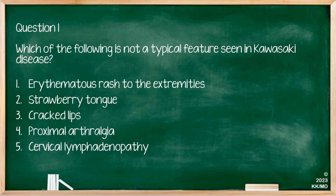Which of the following is not a typical feature seen in Kawasaki disease? Options are erythematous rash to the extremities, strawberry tongue, cracked lips, proximal arthralgia, and cervical lymphadenopathy. Options one, two, three, and five are classic features of Kawasaki disease. While patients may have joint pain, proximal arthralgia is not a typical or classic feature. Therefore the correct answer is number four.